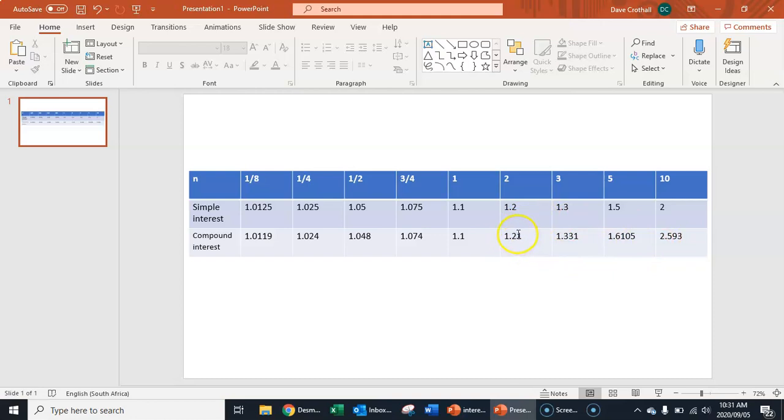And then from that point on your compound interest starts outcompeting simple interest quite considerably. So the first year, after two years, it's only doing better by 0.1. But after three years, it's already beating by 0.031. Then after five years, it's already beating it by 0.11. And after 10 years, it's almost beating it by 0.6.